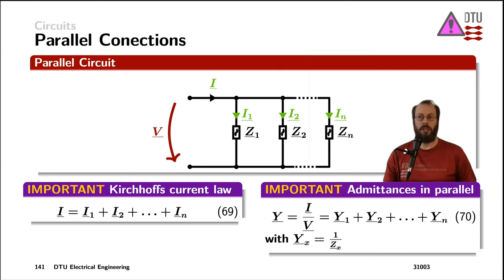The other connection is a parallel connection. In a parallel connection, we have one voltage applied across all of the impedances - Z₁, Z₂, and all the way up to Zₙ.